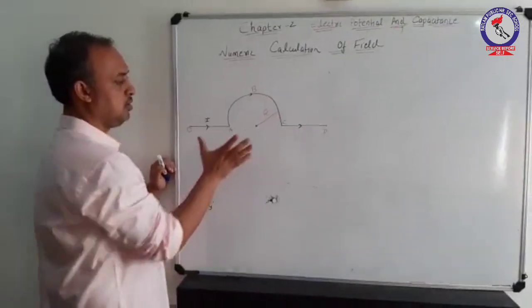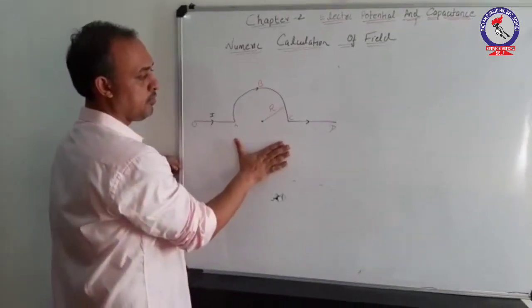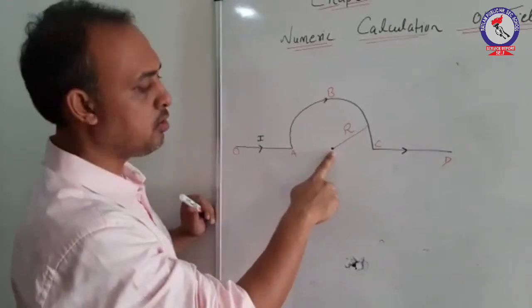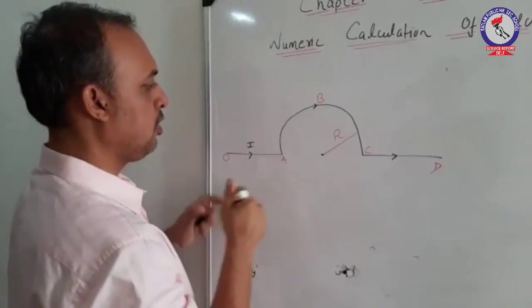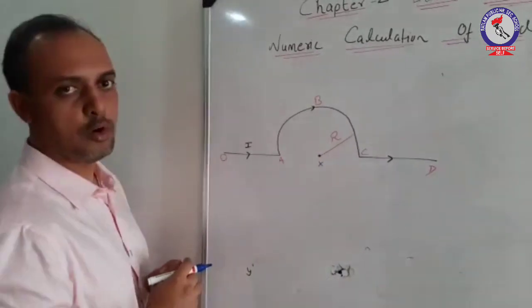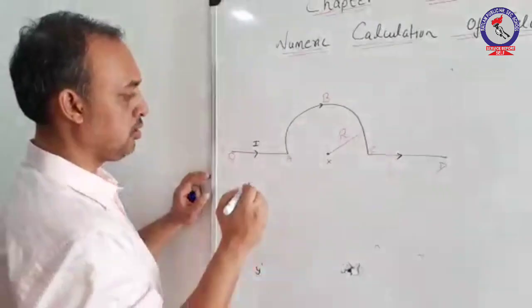As you can observe in this given figure, you need to calculate the field at this point. Let us suppose this point is x. Now if you observe, you will observe three different conductors.